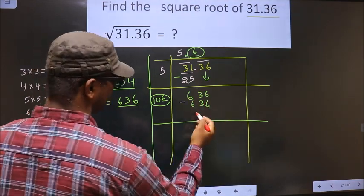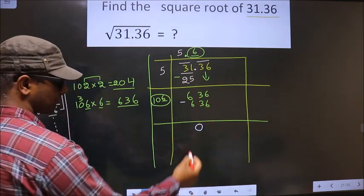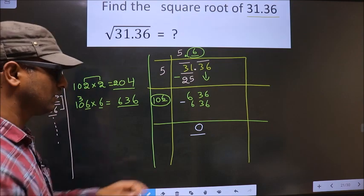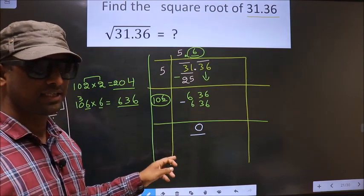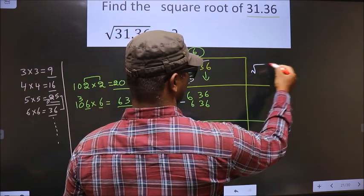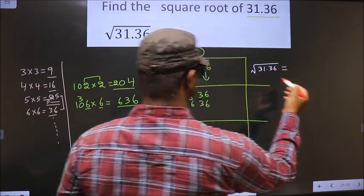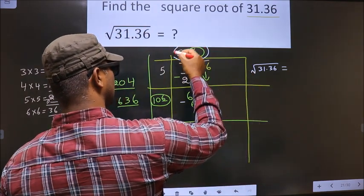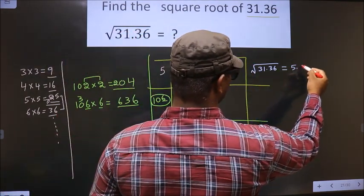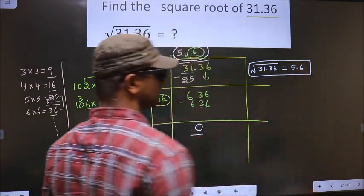Now you subtract: 636 minus 636 is 0. So now here we got exact 6 here. That means the square root of 31.36 is this number, that is 5.6. So this is our answer.